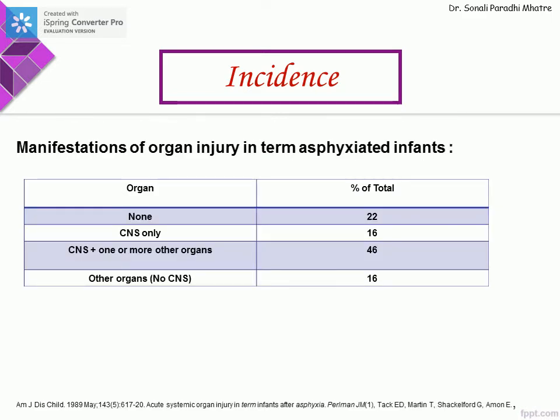A study by Child noted that organ injury in term asphyxiated infants is not just CNS. About 22% of babies could have no organ injury at all, 16% may have only CNS injury, and 46% — a huge figure — can have CNS plus one or more other organs involved. Additionally, 16% may have no CNS involvement but have other organs — including the heart, GI tract, or pulmonary system — affected.